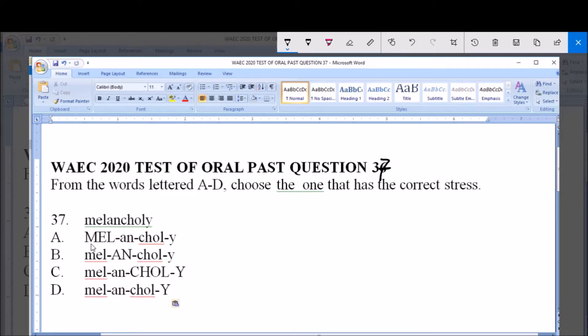In option A, letter M-E-L is capitalized, telling us that the stress actually falls on the first syllable. Option B, A-N is capitalized, telling us that the stress actually falls on the second syllable. In option C, C-H-O-L are capitalized, telling us that the stress actually falls on the third syllable. Then in option D, letter Y is capitalized, meaning that the stress falls on the fourth syllable.